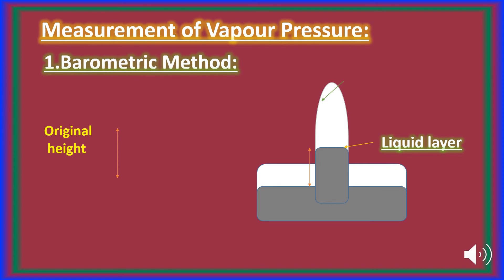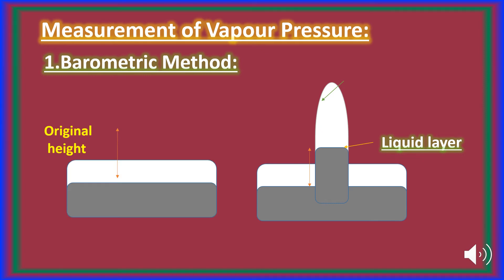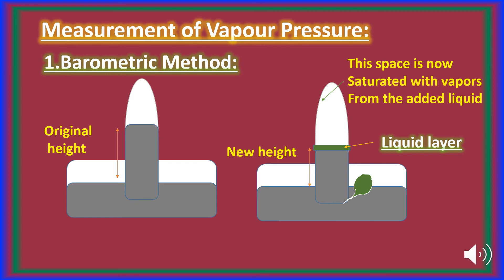Measurement of vapor pressure. Vapor pressure can be measured by two methods: the barometric method and the manometric method. In the barometric method, a dish filled with mercury is taken and a barometric tube also filled with mercury is inverted into the dish. The height of the mercury column is noted. One or two drops of the test liquid are introduced into the barometric tube through its lower end using a dropper. The liquid rises above the mercury surface, a part vaporizes, and due to the pressure exerted by the vapors, the height of the mercury column falls. When it becomes constant, it is noted, and the difference in height gives the vapor pressure. Although convenient, this method is not very accurate.